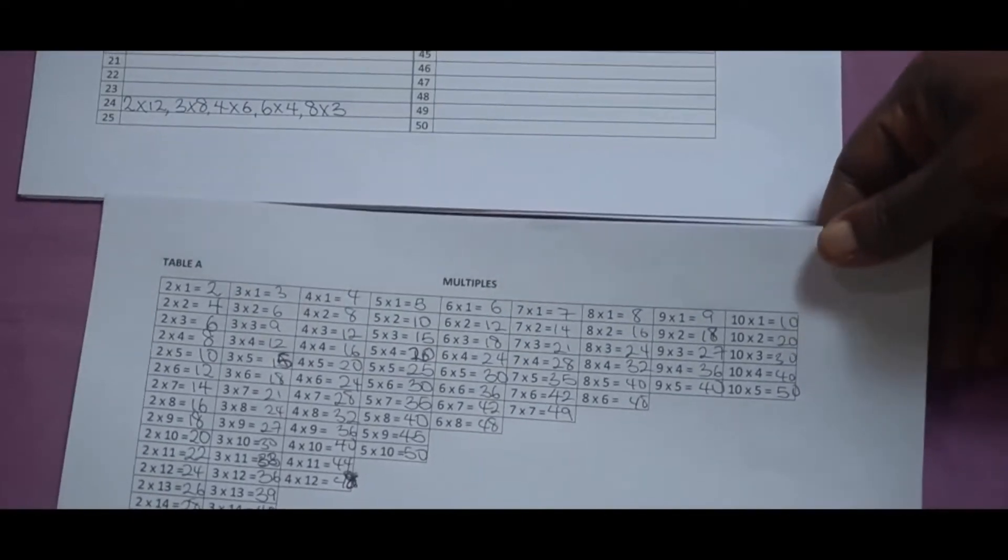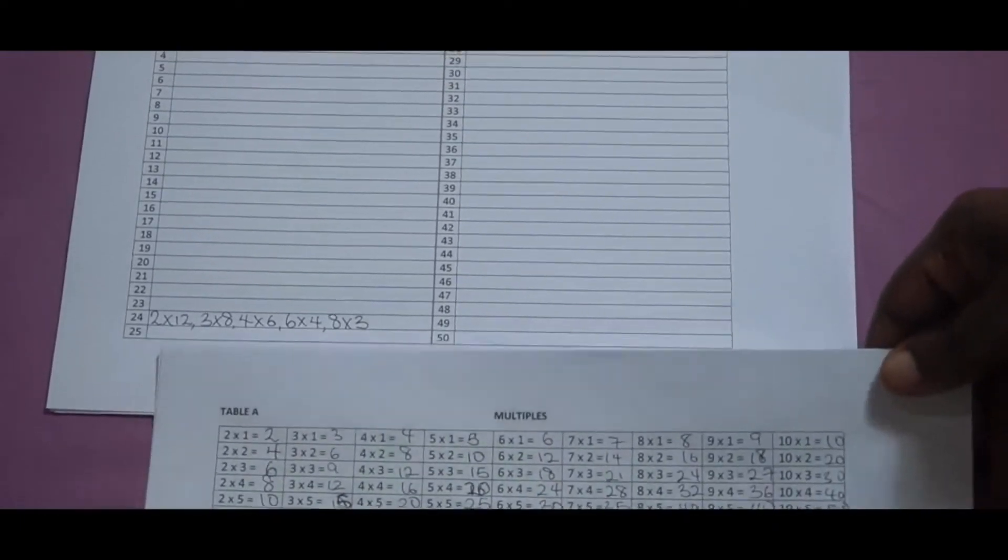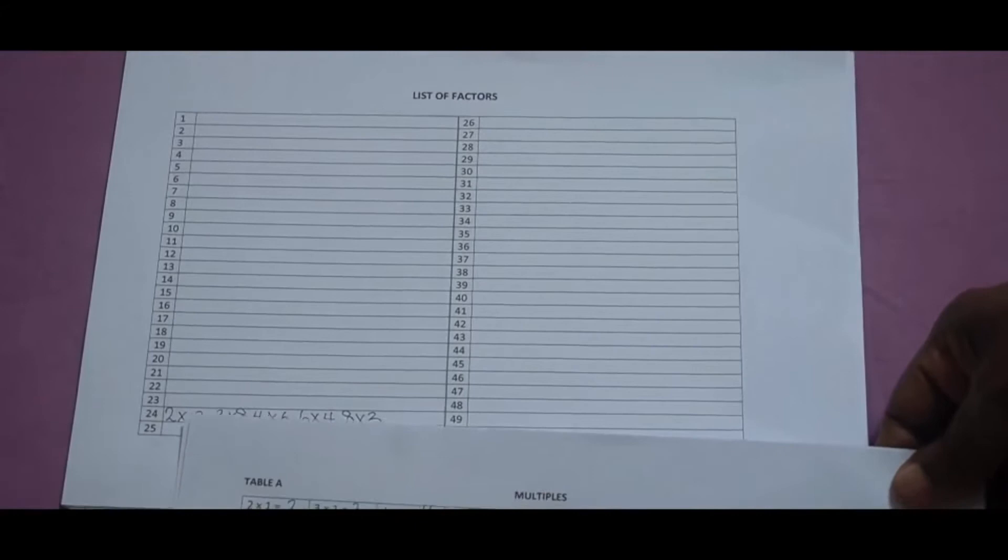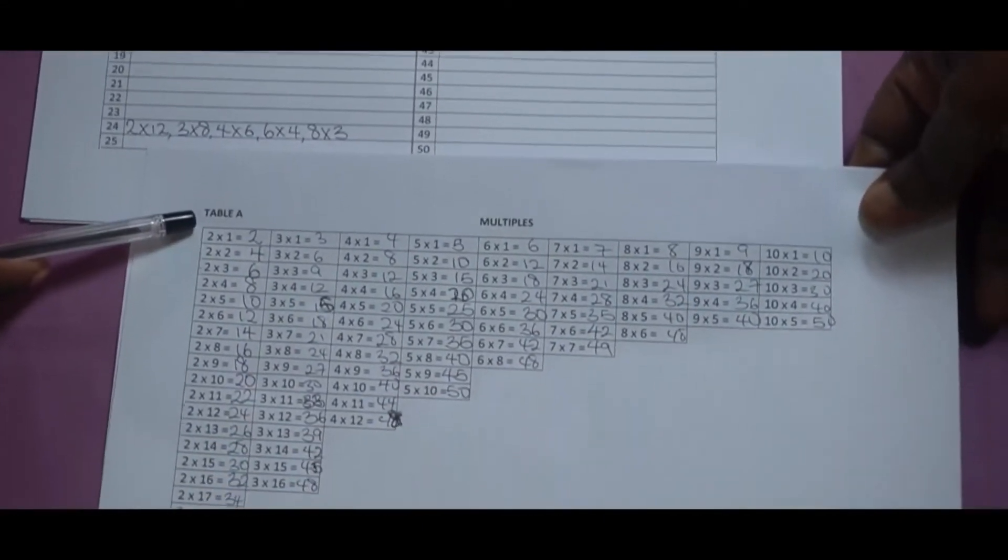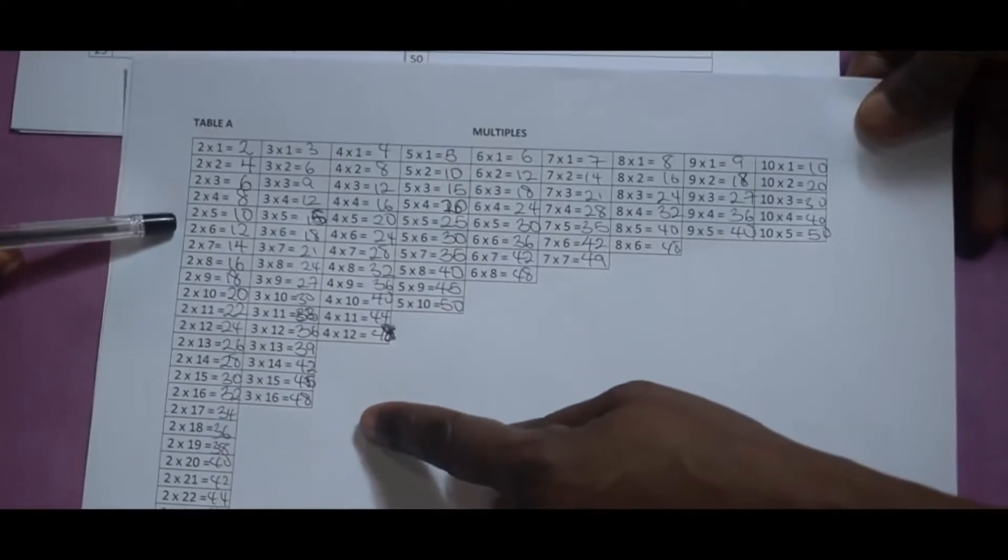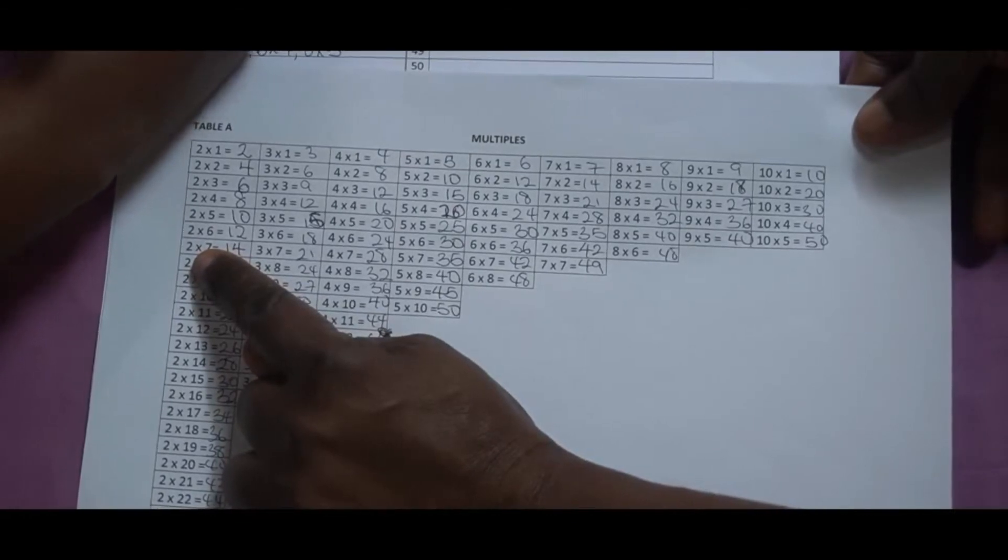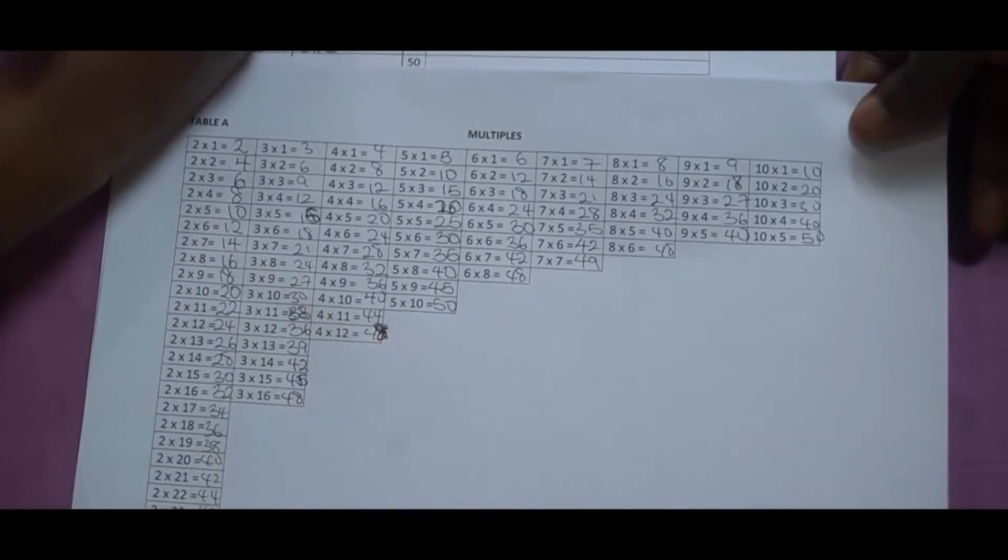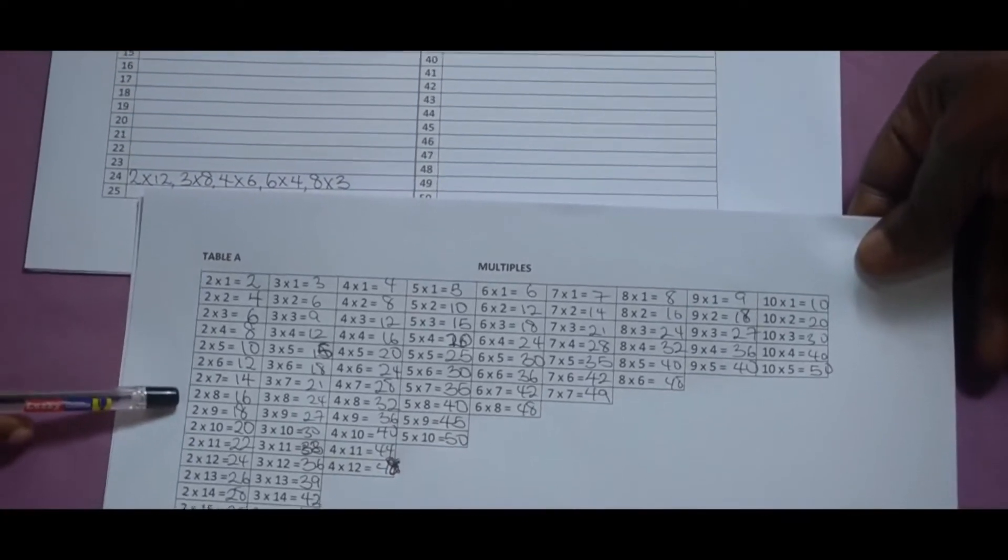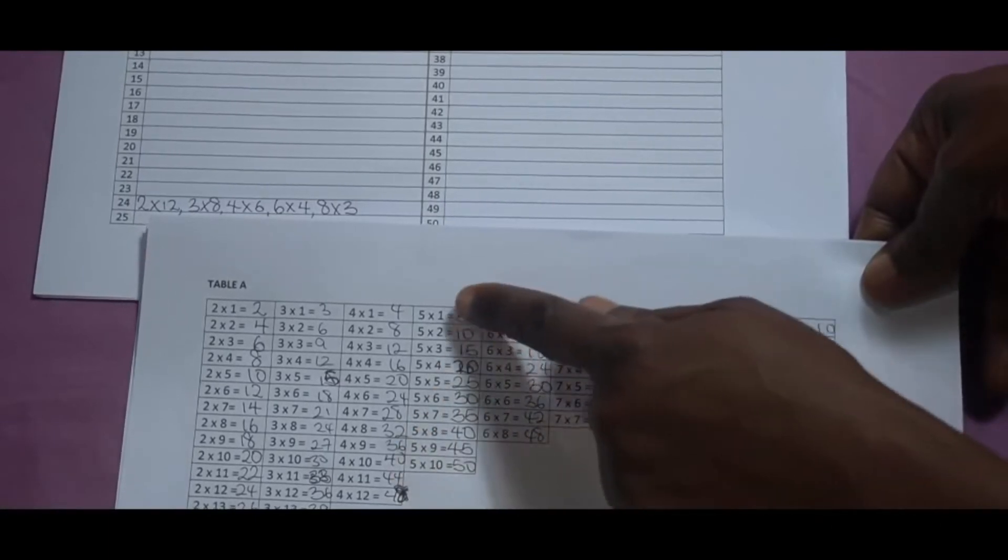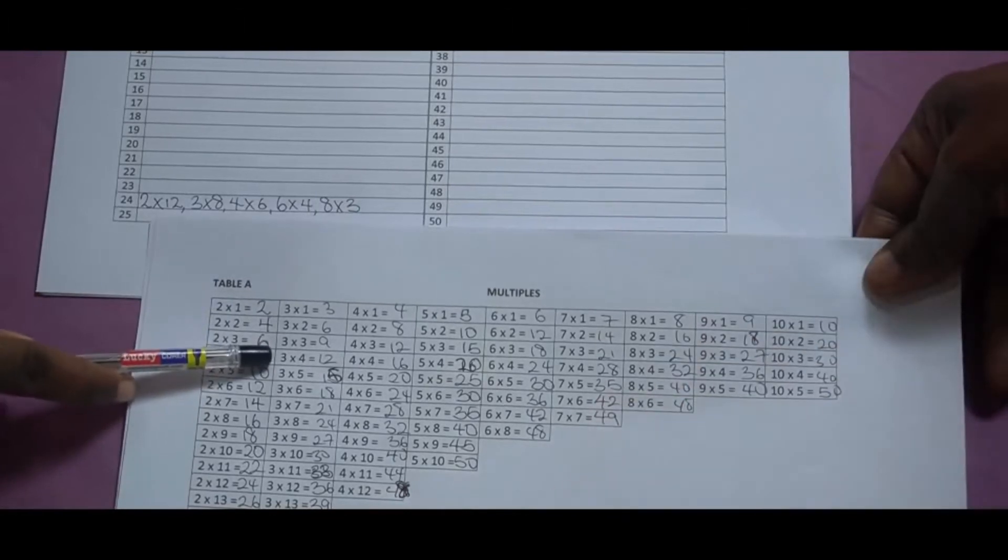Okay, so which other number do you want to choose now? 12. Okay, so let's look at the various combinations of 12 we have. Where can you find 12? 2 times 6, write that down. Where again can you find 12? 3 times 4, write it down.